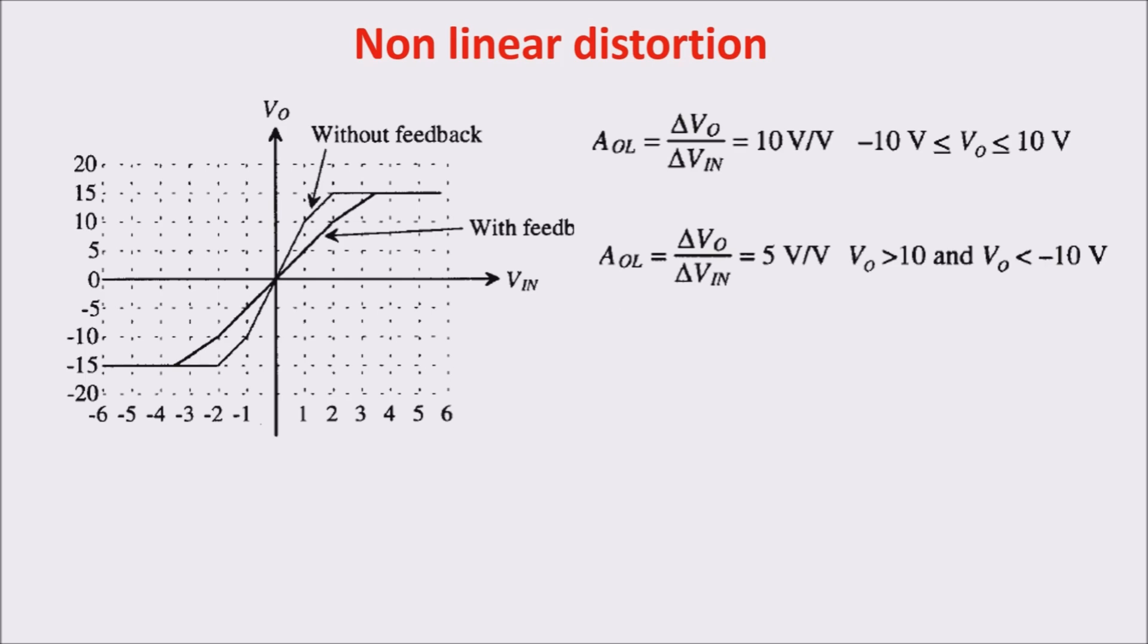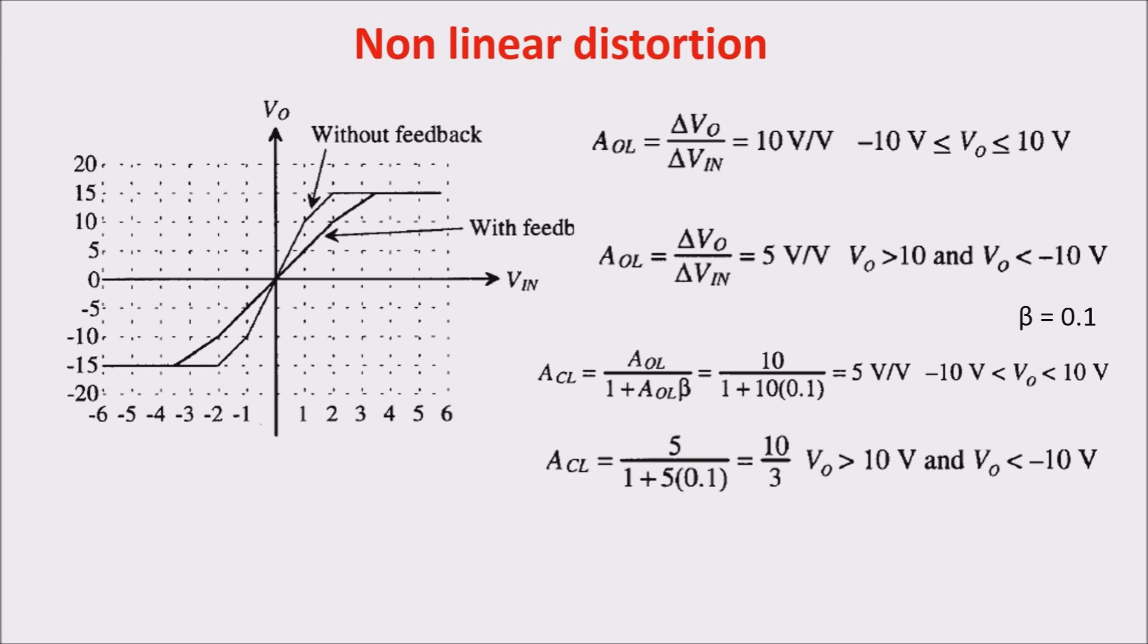Now suppose that the feedback is applied around the amplifier with beta equal 0.1 and the transfer curve is redrawn. The gain of the amplifier with feedback becomes this for Vout between plus and minus 10 volts and this for Vout larger or less than 10 volts. You see from the result in the diagram that there is a linearization.